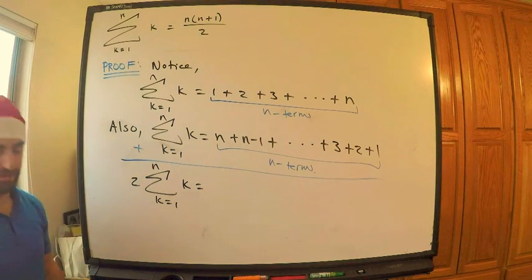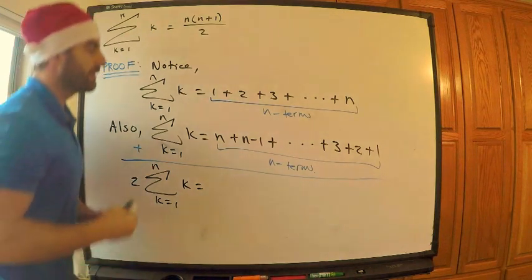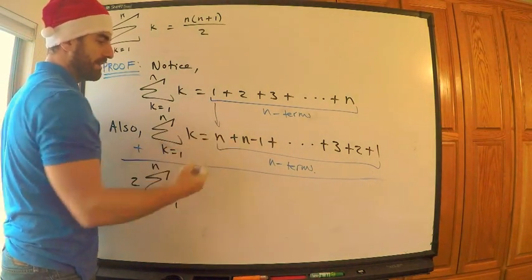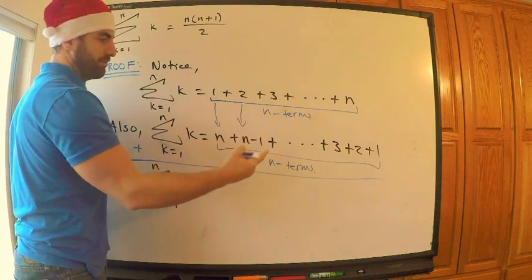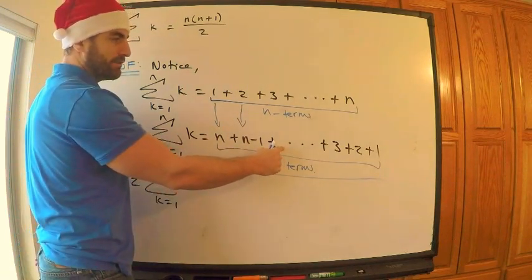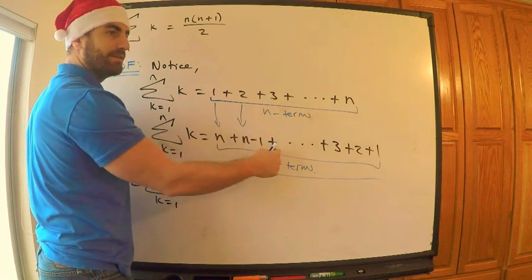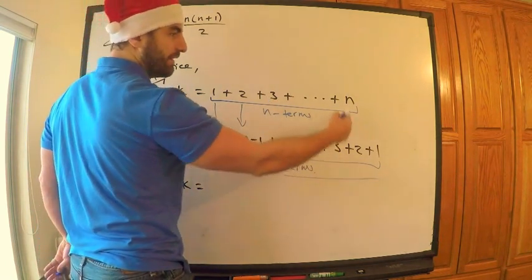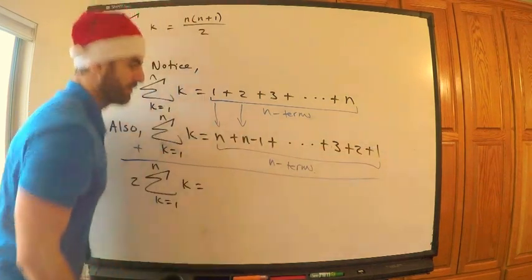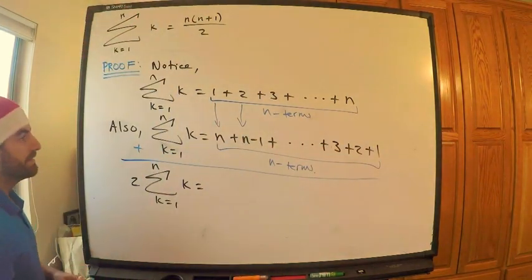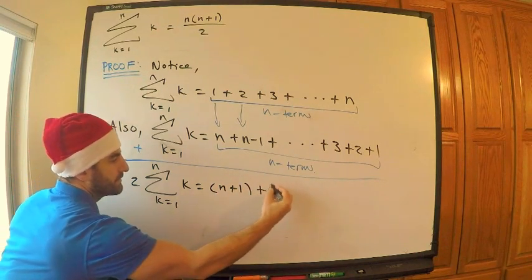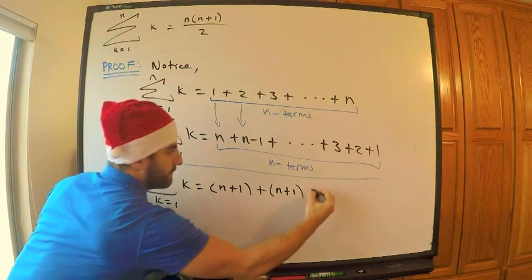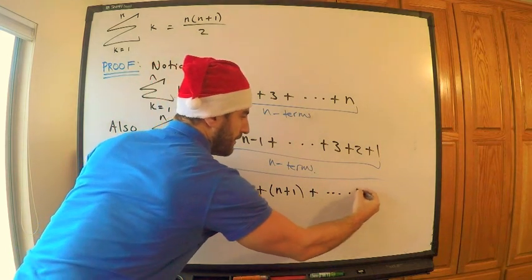Now what's on the right-hand side? If I add up all these corresponding terms here, 1 plus n is n plus 1. What is 2 plus n minus 1? n plus 1. The next one here would be n minus 2 plus 3, 3 plus n minus 2, n plus 1. If I go down here, they're all n plus 1. So what I get here is n plus 1, plus n plus 1, plus, they're all n plus 1.